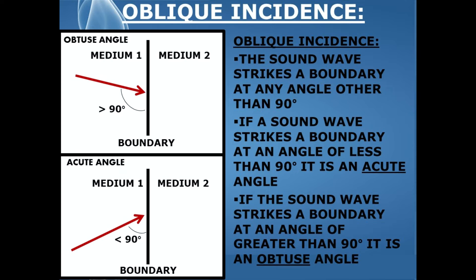The second type of incidence is known as oblique incidence. This is when a sound wave strikes a boundary at any angle other than 90 degrees. Think back to geometry class and acute and obtuse angles. In the top diagram, the sound wave — the red arrow — is striking the boundary at an angle greater than 90 degrees. This is known as an obtuse oblique incident angle.